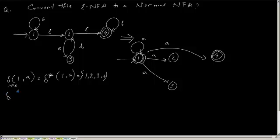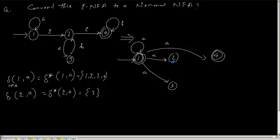Delta of (2, a) equals delta-star of (2, a). From state 2, applying the transition function with 'a', you can only reach state 3. The epsilon closure of 3 is just {3}. So delta of (2, a) is {3} only.